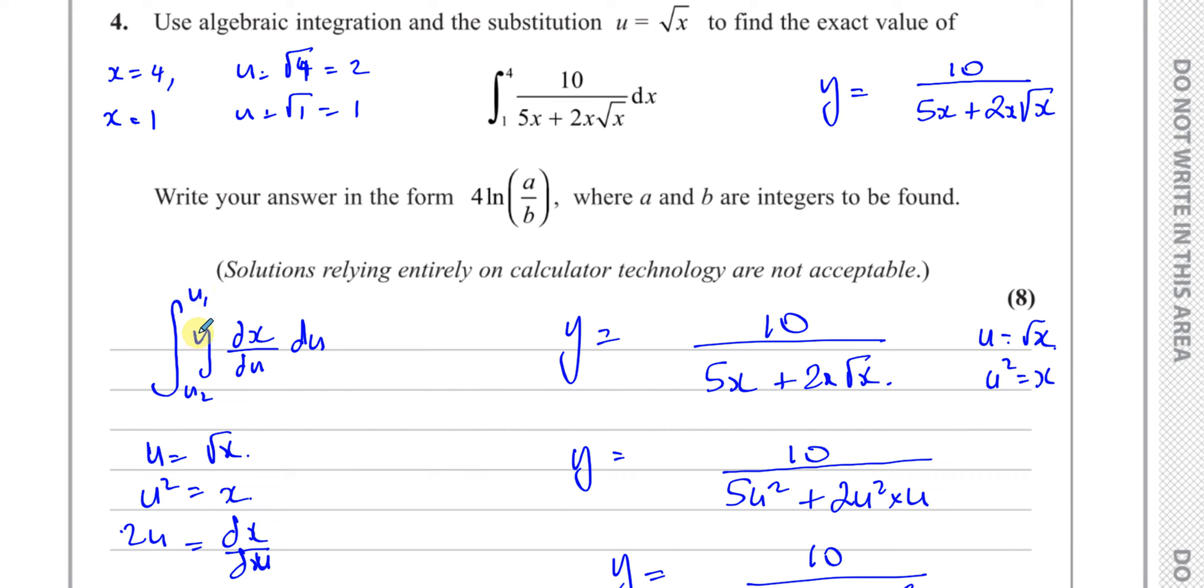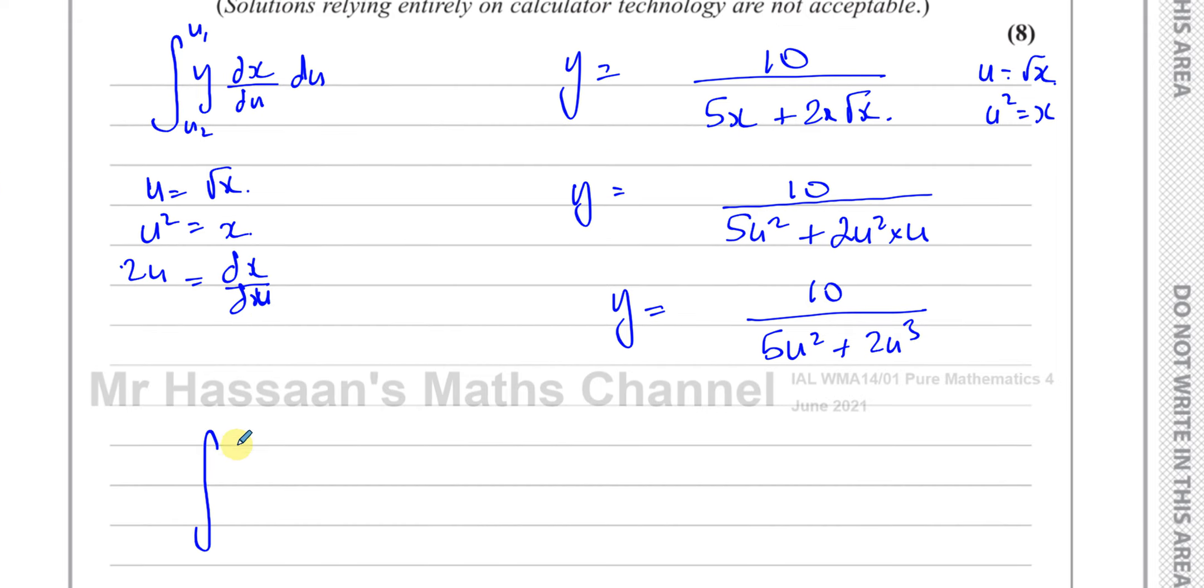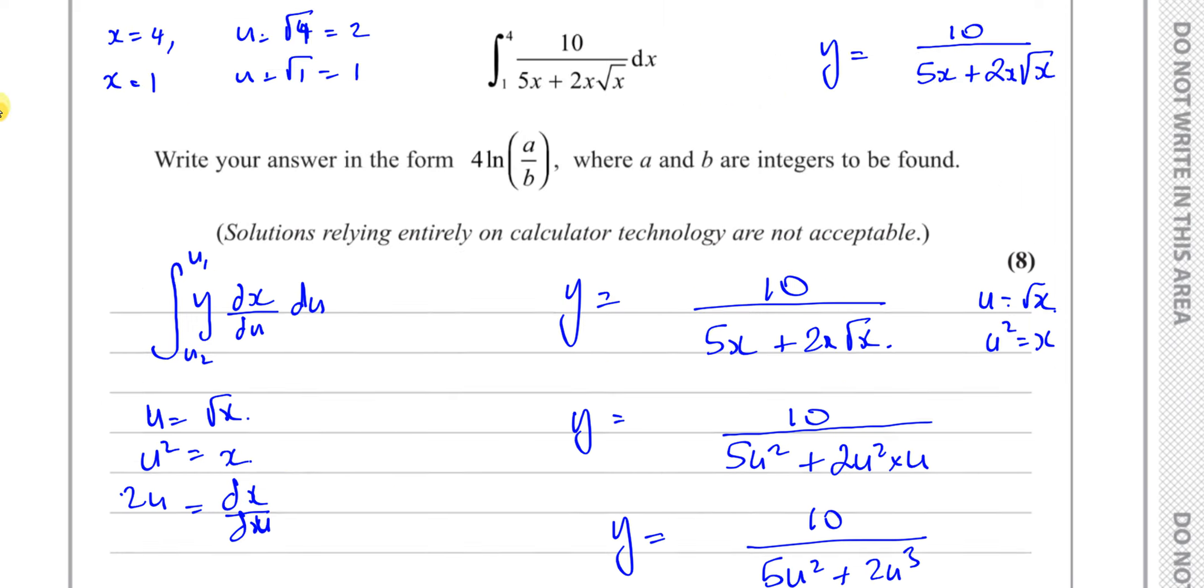So now I can fill this whole thing in. I'll have the integral between the limits of 2 and 1 of y, which is now 10 over 5u squared plus 2u cubed times dx/du, which is 2u. So multiplied by 2u with respect to u. And these limits are now in terms of u. Now integrating that will give me the exact value of what I'm looking for.